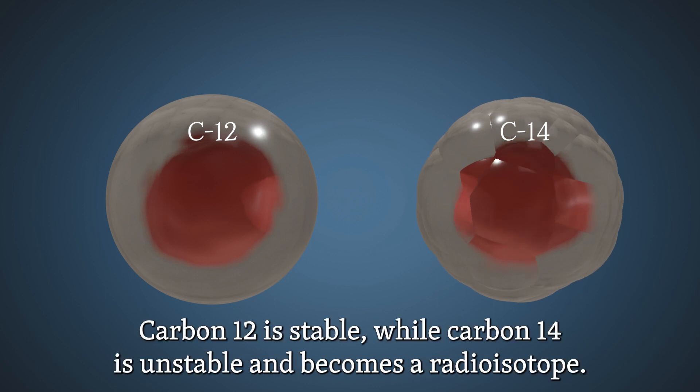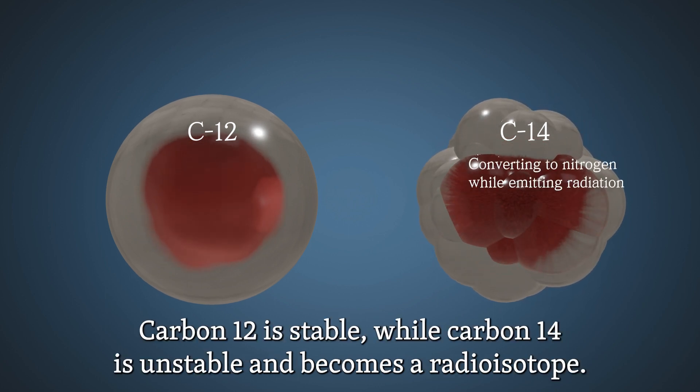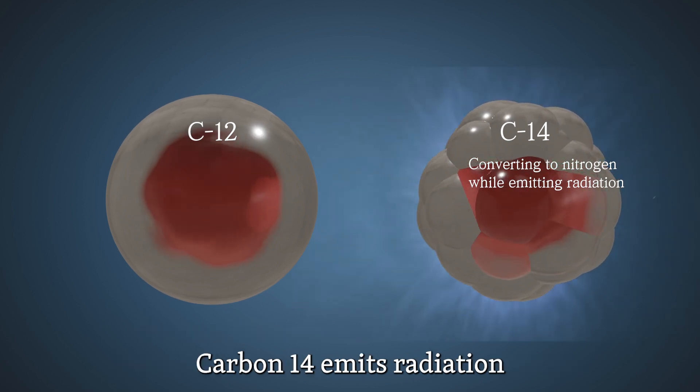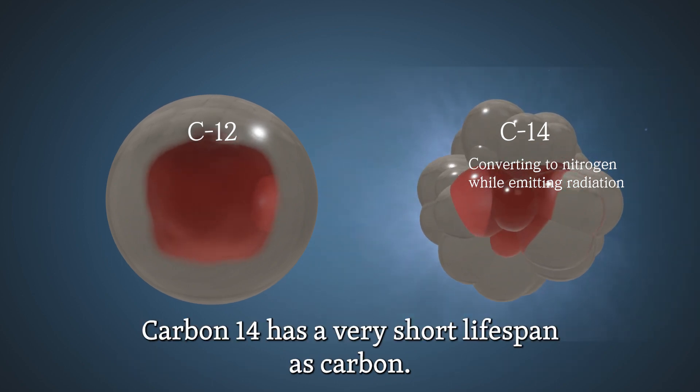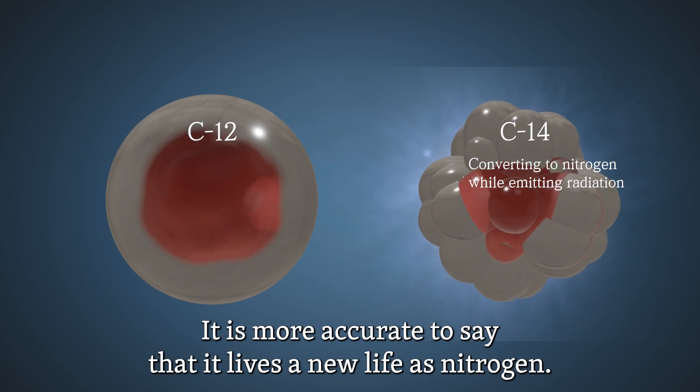Carbon has isotopes. Carbon-12 is stable, while carbon-14 is unstable and becomes a radioisotope. Carbon-14 emits radiation and decays into nitrogen to become stable. Carbon-14 has a very short lifespan as carbon. It is more accurate to say that it lives a new life as nitrogen.